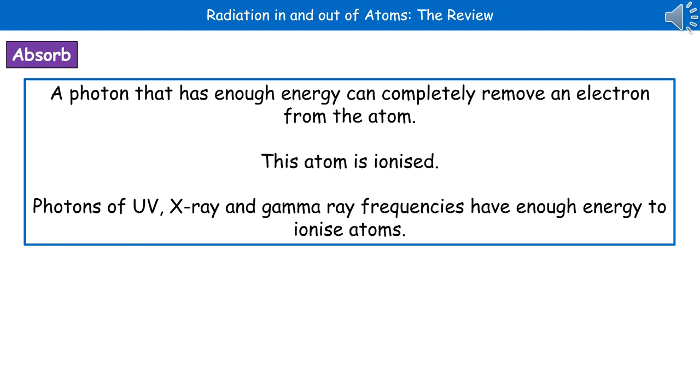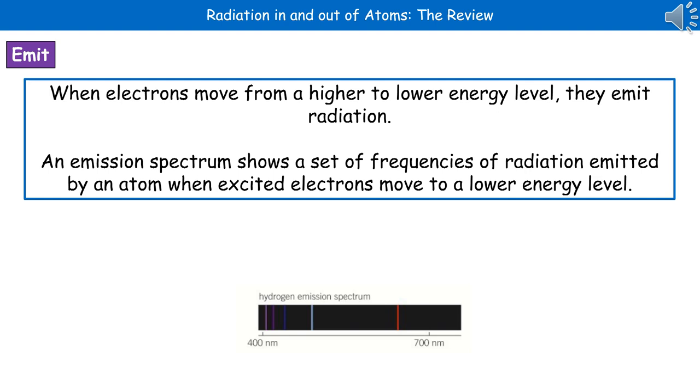If a photon has enough energy, it can completely remove an electron from the atom. We say that the atom has been ionized. The photons that have enough energy to ionize atoms are those of the ultraviolet, X-ray and gamma-ray frequencies.